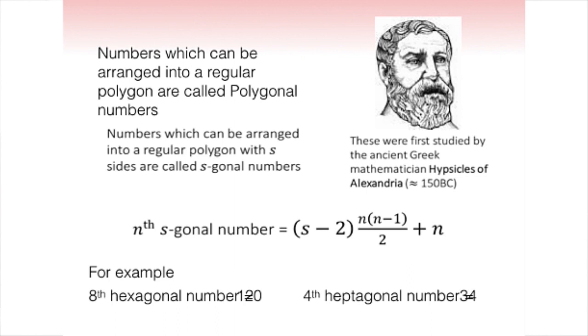For the triangular numbers and square numbers we found nice formulas. So for any s, can we come up with a formula? Is somehow three and four special, or can you do it for any s? It turns out we can. I didn't know this formula until I looked it up a couple of days ago, but we can construct a formula to work out the nth polygonal number for any number of sides.